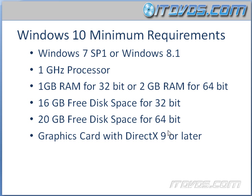If we're going to be upgrading to Windows 10, we're going to need to upgrade from at least Windows 7 with Service Pack 1 or Windows 8.1. So if we've got Windows 8, we need to upgrade to Windows 8.1 before we can do an in-place upgrade to Windows 10.